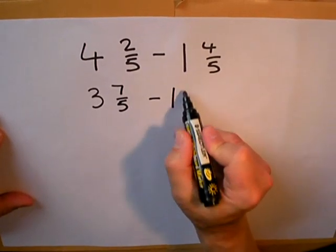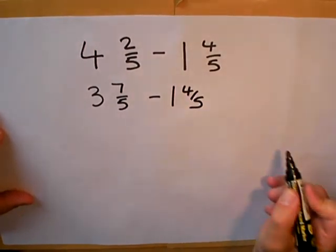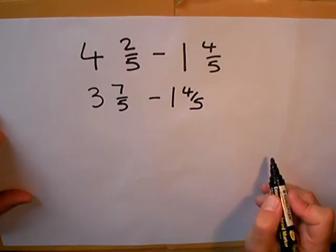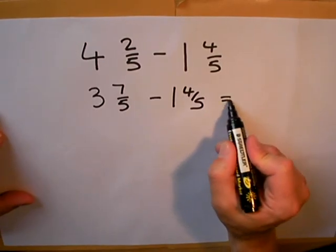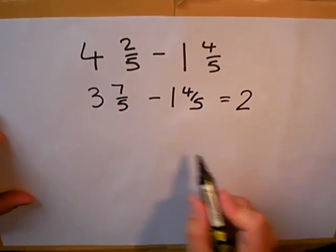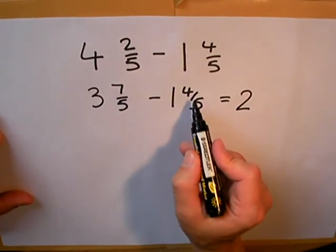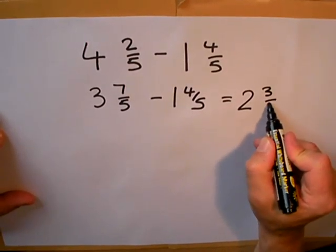I write down the second part of my question completely unchanged. But now I've got a sum that I can do easily. Three subtract one is two whole ones. And seven fifths take away four fifths is three fifths.